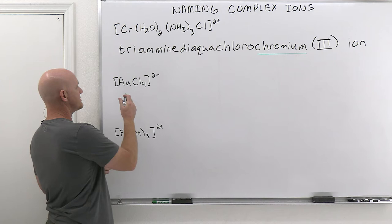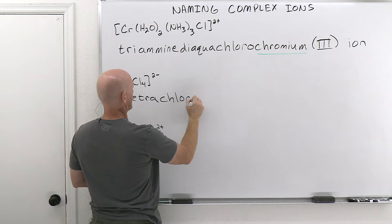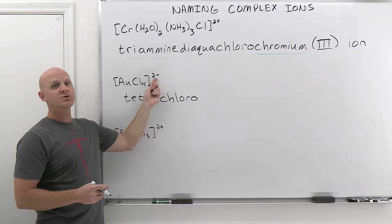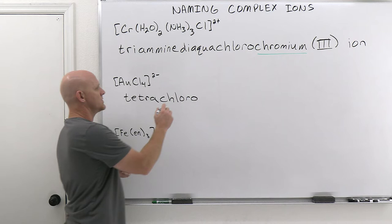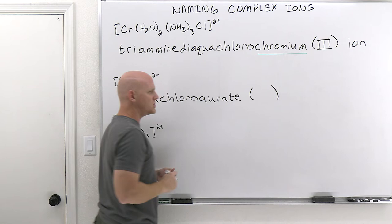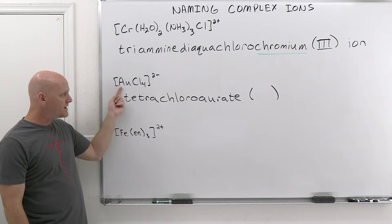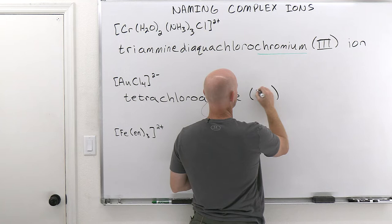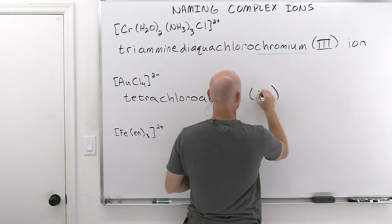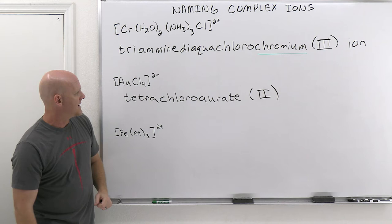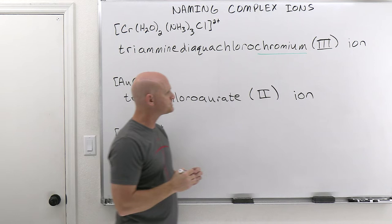In this example, we name the ligands first — four chloro ligands, and four is tetra, so tetrachloro. Because this complex has an overall negative charge, we use aurate instead of gold. Chloro is minus one each, and the overall complex ion is minus two, so gold must be plus two — Roman numeral II in parentheses. This is the tetrachloroaurate(II) ion.